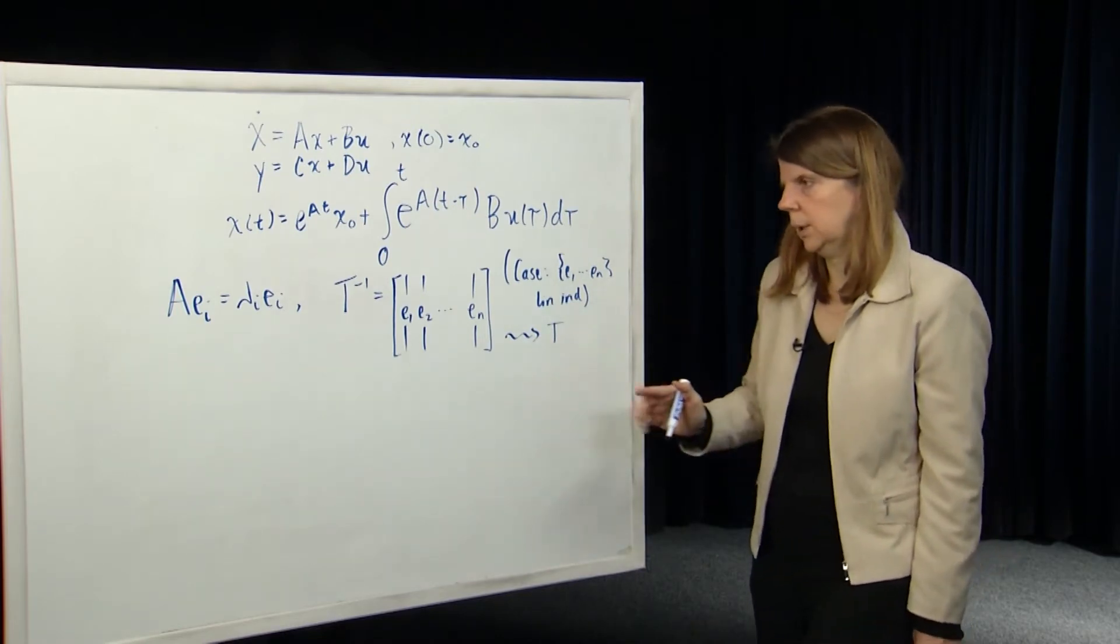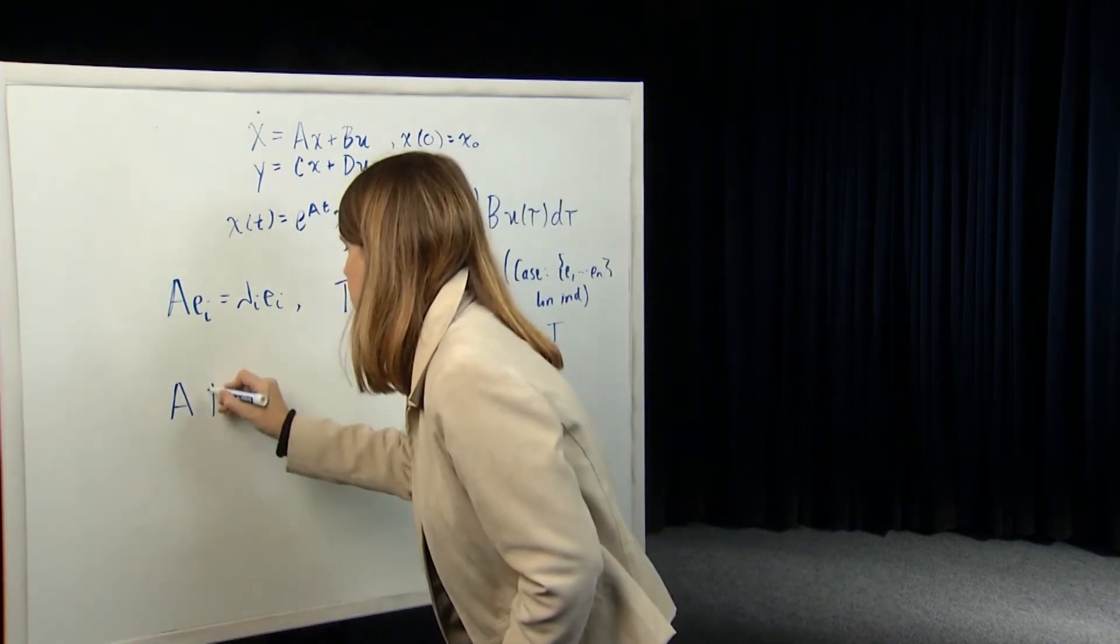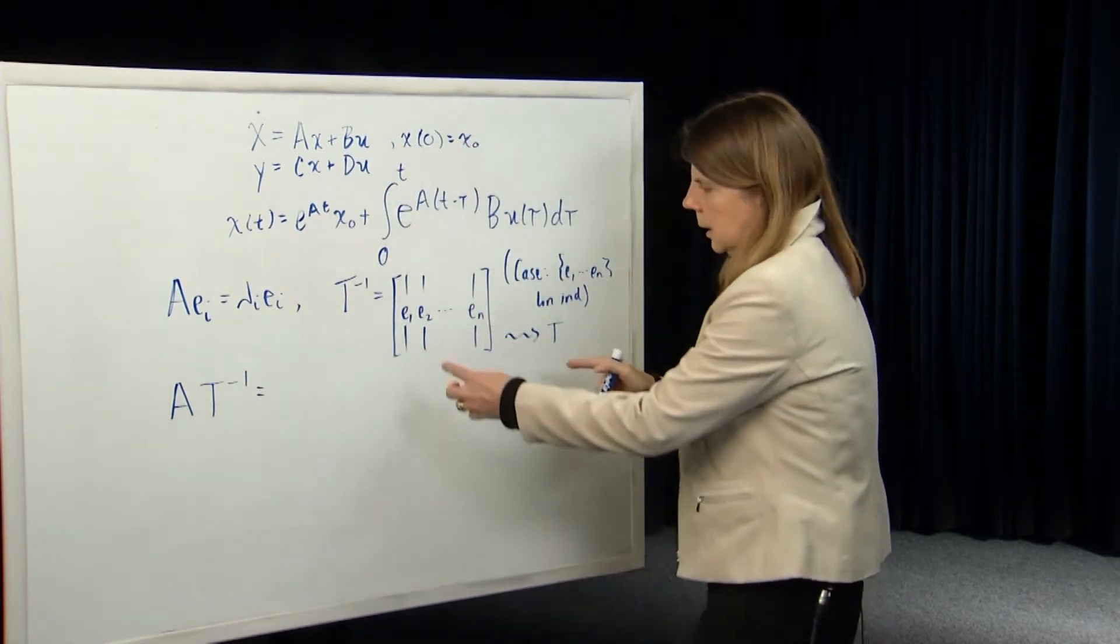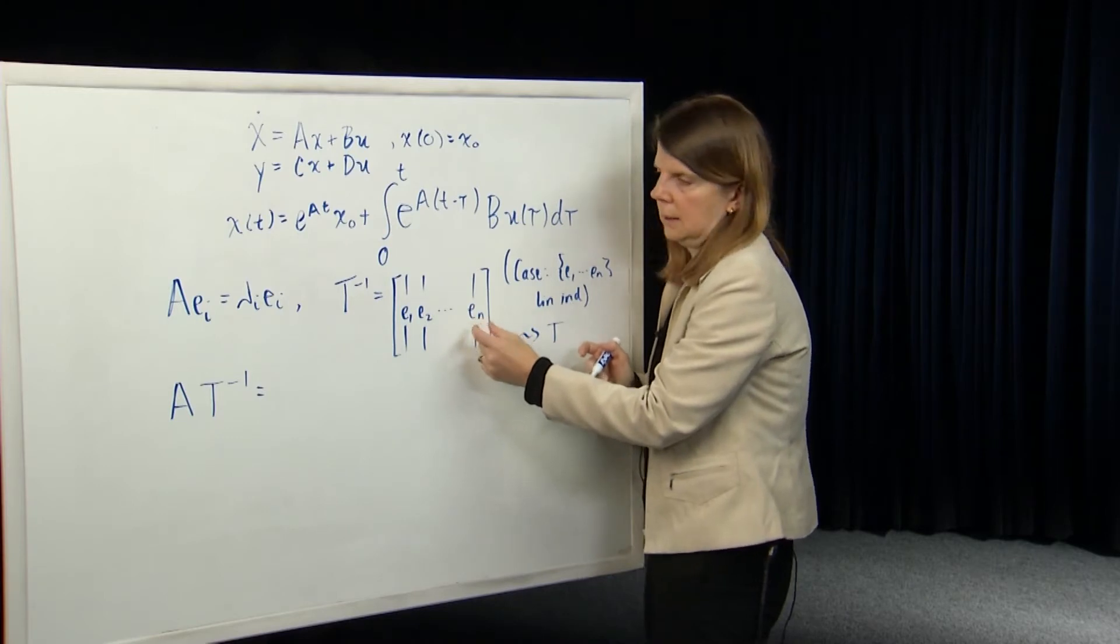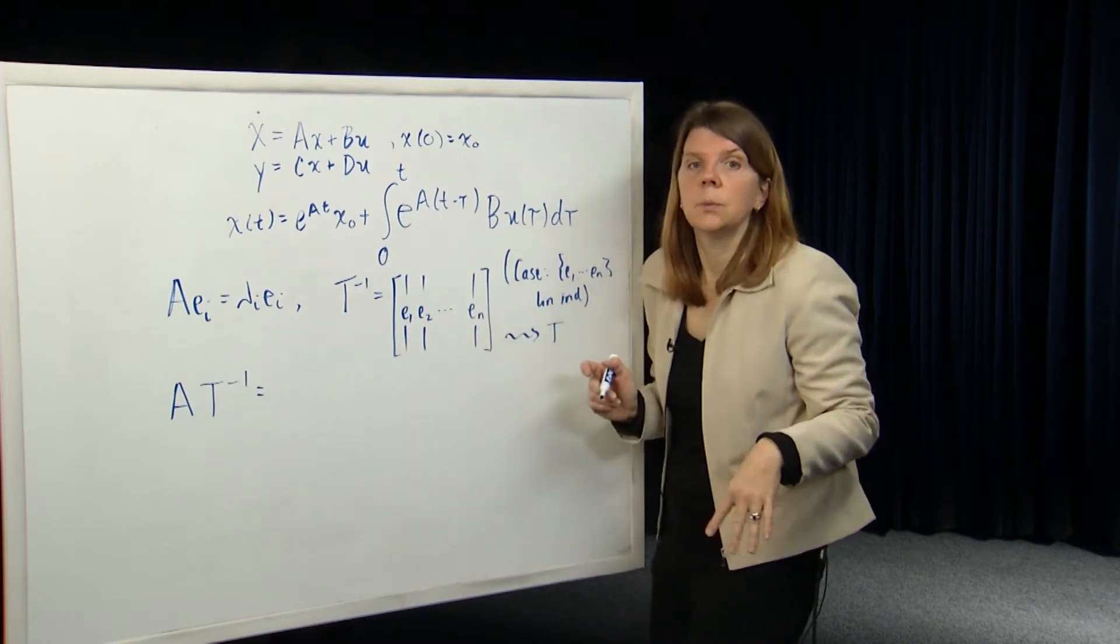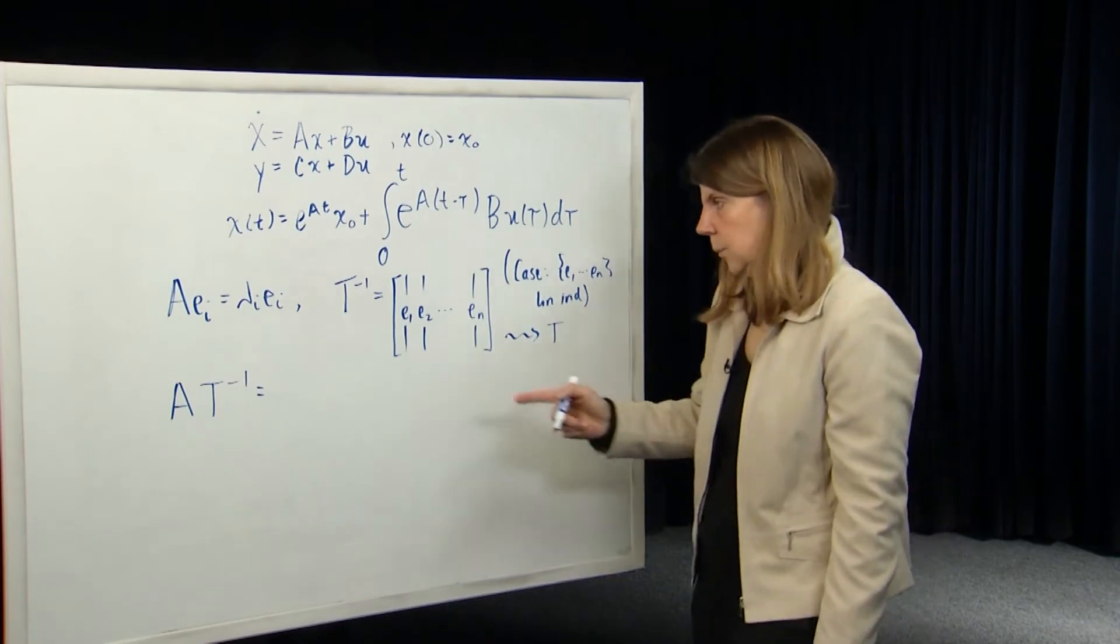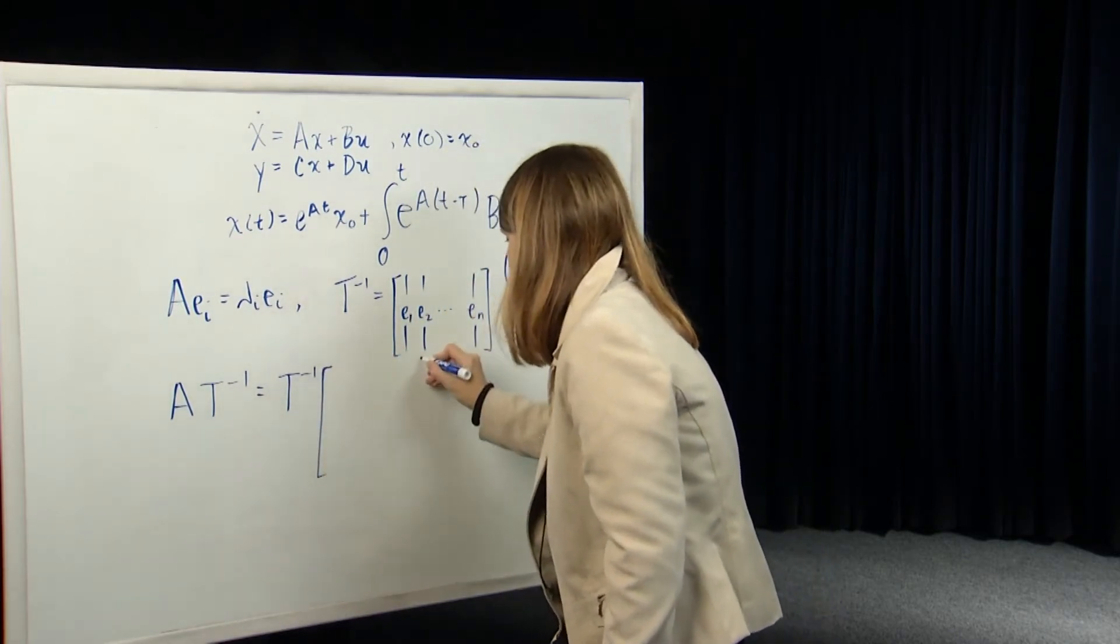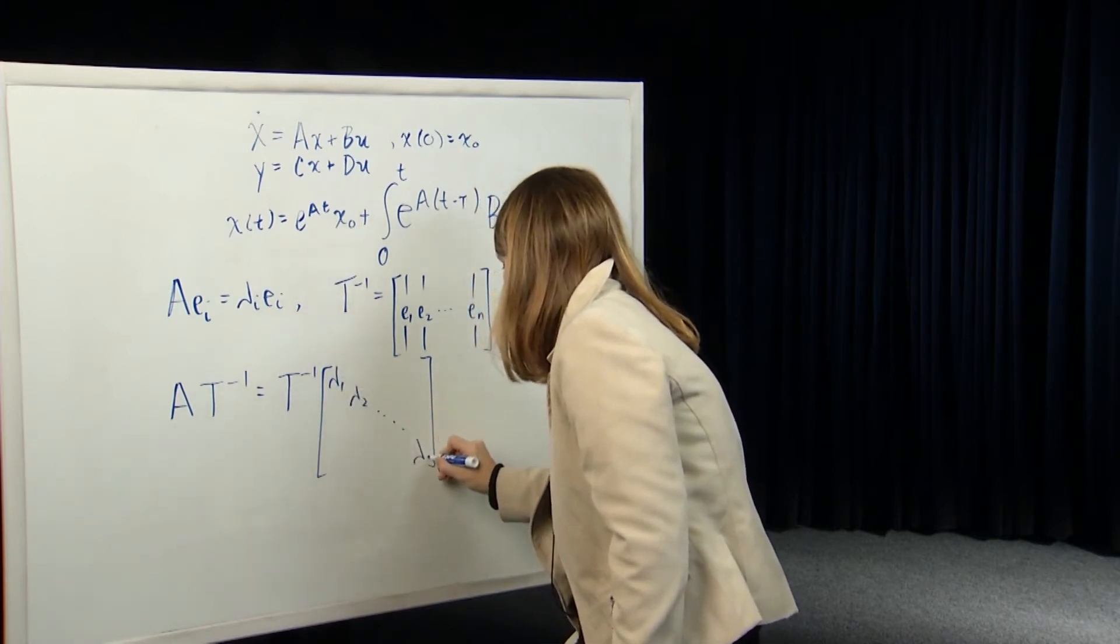Now consider the following multiplication. Say we take that matrix A and we post-multiply it by the matrix T inverse. So we can see that that's going to be A times these columns: Ae1, Ae2, up to Aen. We use the definition of the eigenvalue to recognize that Ae1 is just lambda 1 E1, Ae2 is lambda 2 E2. And so we can see that we can rewrite that as just this matrix T inverse times a matrix, a diagonal matrix whose diagonal entries are the eigenvalues of the matrix A.